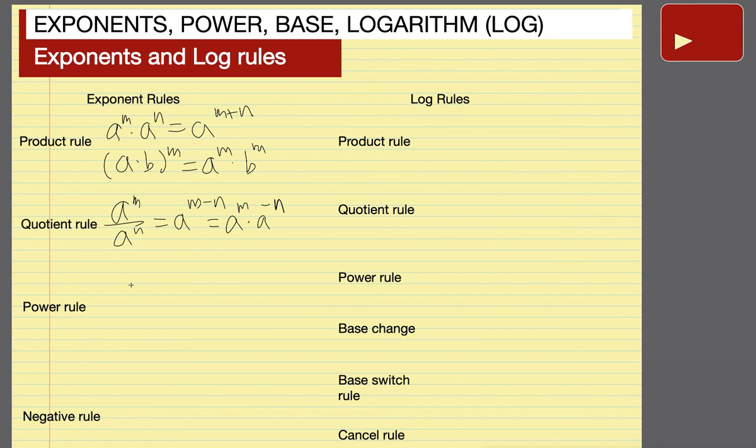And the next quotient rule says that a over b to the power of m is equal to a to the power of m divided by b to the power of m. This is what you probably can guess.